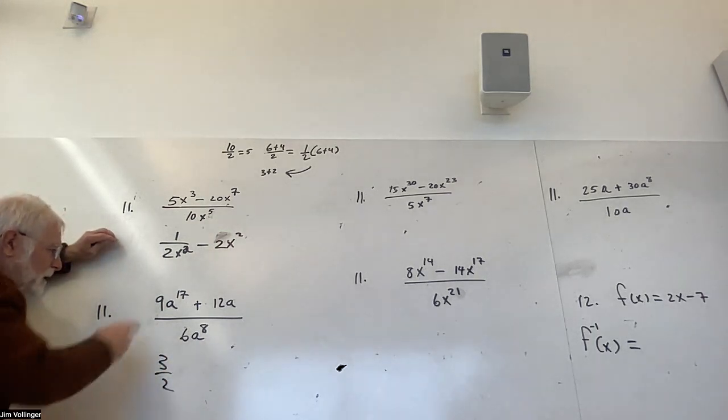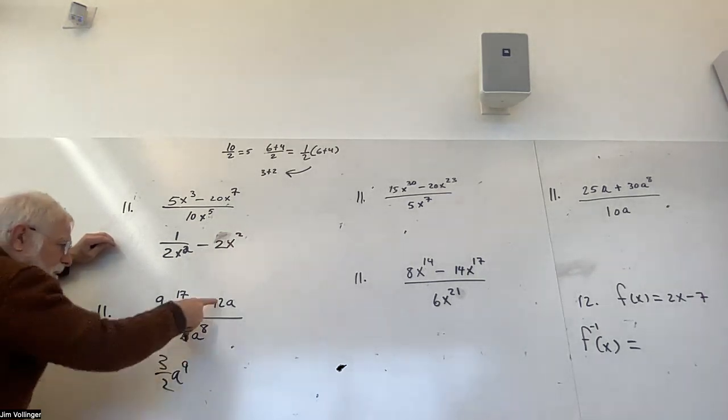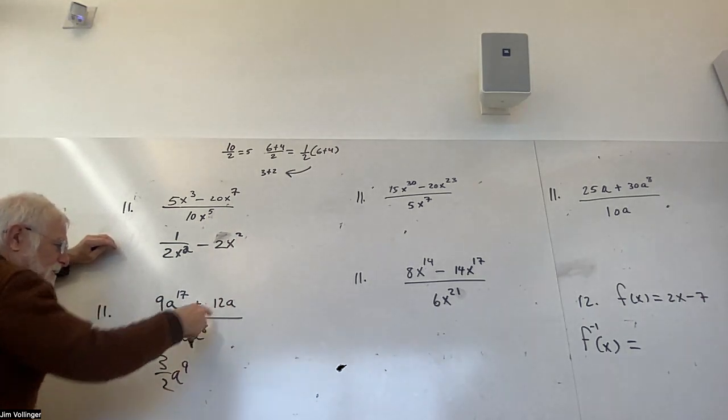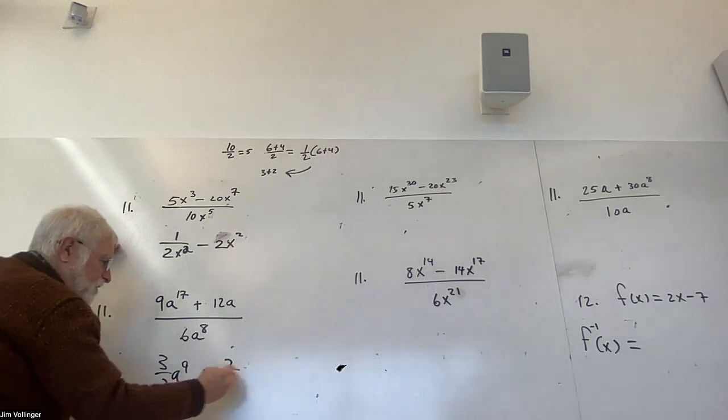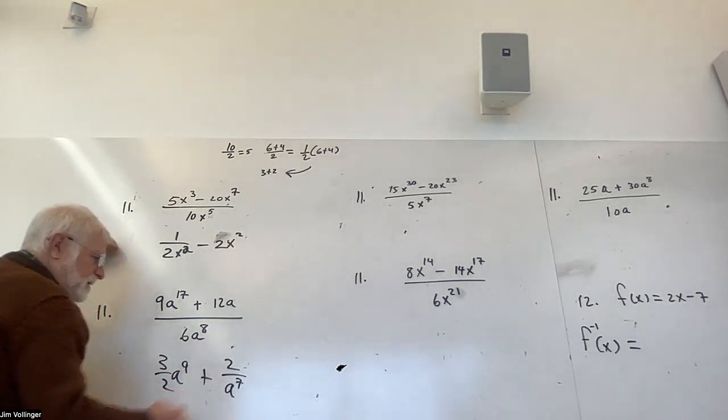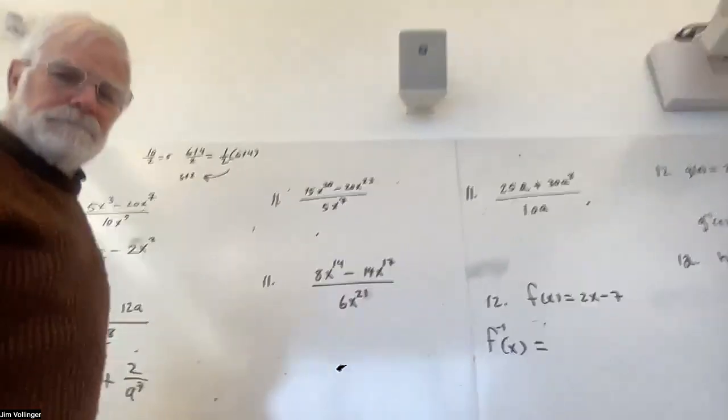Alright, 9 and 6 is 3 halves. I can divide each by 3. 17 and 8, 9 more factors in the numerator. 8a, so there's 7 more in the denominator, and 6 goes into 12 twice. So 2 takes care of the integers, and 8 to the 7th takes care of the a values. More practice.